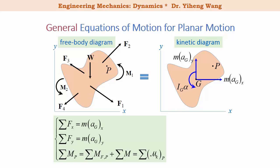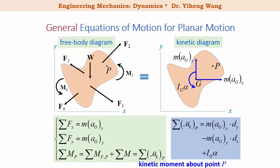The resultant force along the y direction similarly equals m·a_Gy. If you choose a different coordinate system, for example normal or tangential coordinates, you can write these two equations differently. The last equation — the resultant moment about any arbitrary point P — equals the total kinetic moment about P, calculated by treating m·a_Gx and m·a_Gy as inertia forces, computing their moment about P, and also treating I_G·α as a free couple moment. These are the equations of motion for planar motion in their most general form.